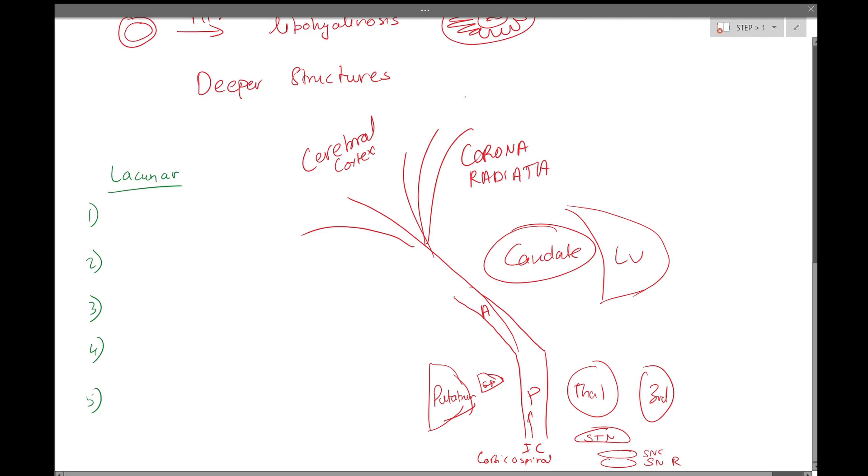So now we can talk about lacunar syndromes and high yields in this area. The lacunar syndromes in order of most to least common would be pure motor. Pure motor, as it describes, is contralateral hemiparesis: arm, leg, possibly face. Generally, it's the arm and leg. In this case, we're going to knock out the posterior limb of the internal capsule.